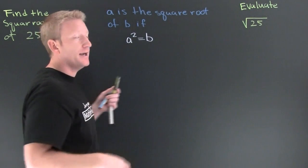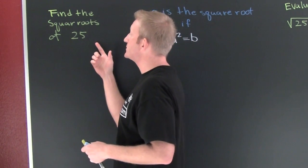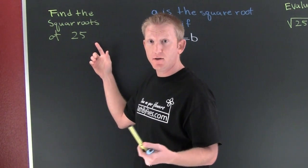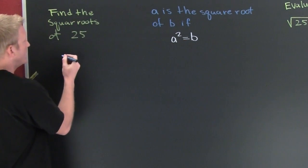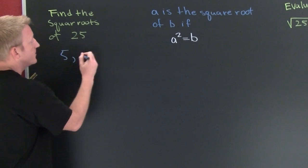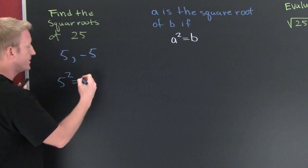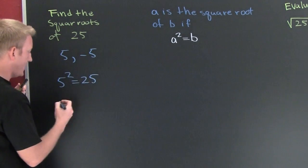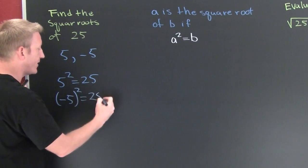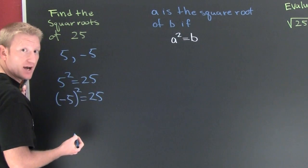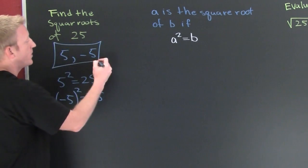Let's see an example. Find the square roots of 25. Well, the square roots of 25 are 5 and minus 5, and here's why: 5 squared is 25 and minus 5 squared is equal to 25. Because both of those numbers squared is 25, they're both square roots of 25.